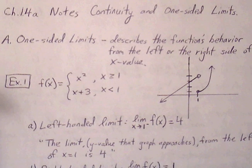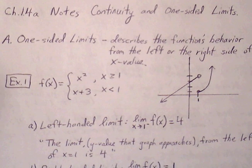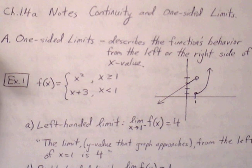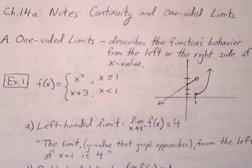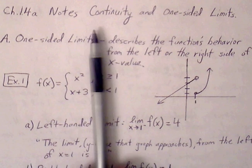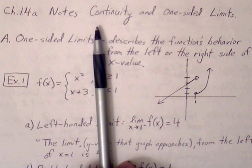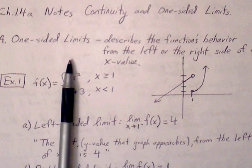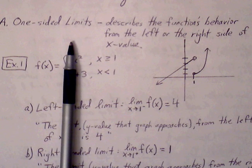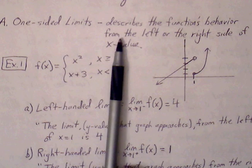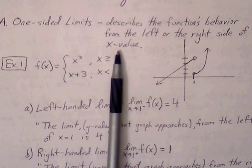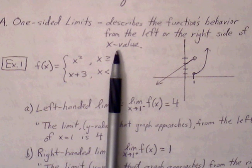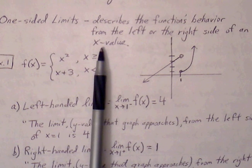We're going to continue talking about continuity. This is chapter 1.4a, notes on continuity and one-sided limits. One-sided limits describe a function's behavior from the left or the right side of a target x value on a graph.